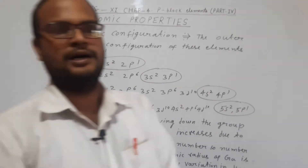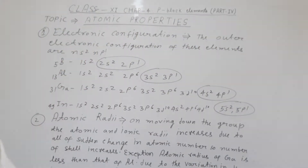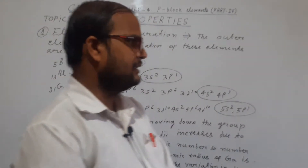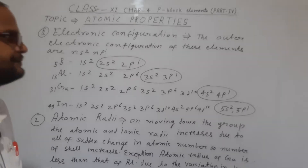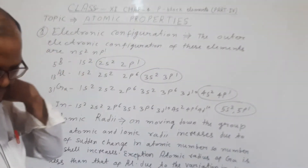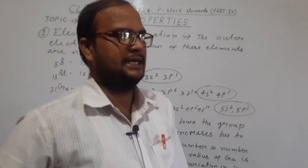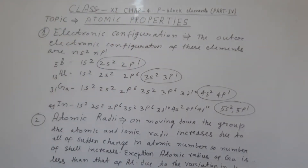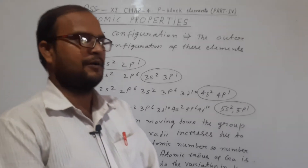Good morning, all the students of class 11th. Today I am going to start the topic 'Atomic Properties of the P-block Elements.' In the last class, we already told you about the P-block elements and the Boron family — Group 13 elements — in which Boron, Aluminium, Gallium, Indium, and Thallium are present, and their state and abundance in nature. Today we discuss how atomic properties differ from each other.